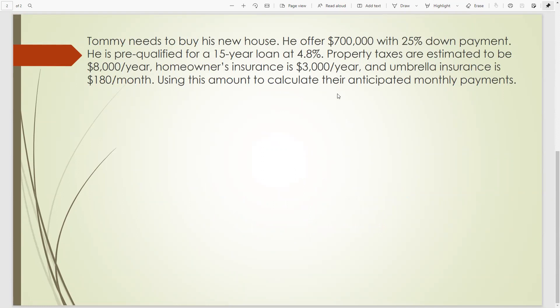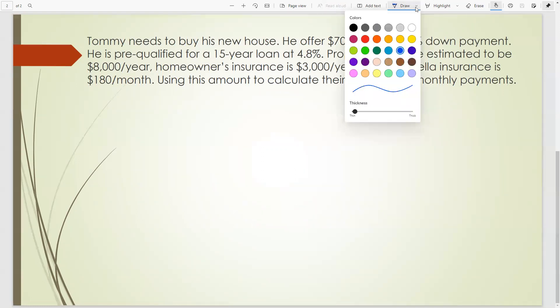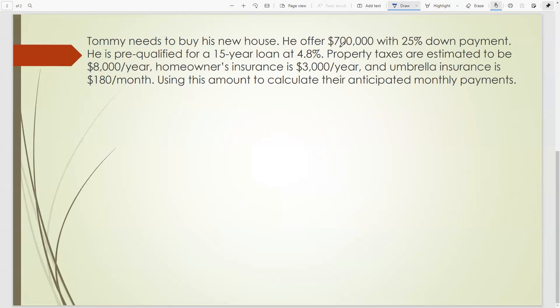And with this example, we will see if Tommy wants to buy a house, offers $700,000, 25% down payment, pre-qualifying, 15-year loan with 4.8% interest rate, property tax estimated to be $8,000 a year, homeowner insurance $3,000 a year, and umbrella insurance $180 per month.